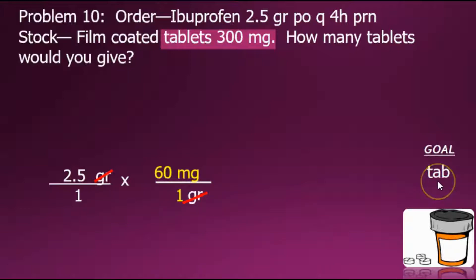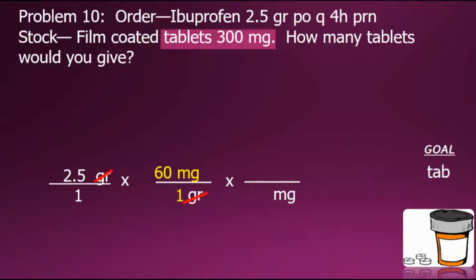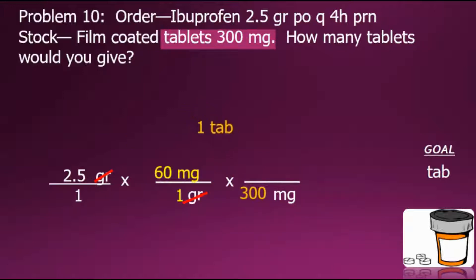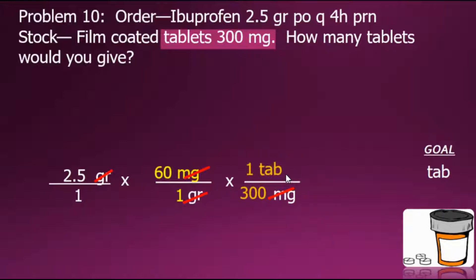We're not quite at our goal yet, so we need to establish another conversion factor fraction with milligrams in the denominator to cancel out the current unit. Returning to the information given in the problem, one tablet equals 300 milligrams. Expressing these as a conversion fraction with one tablet in the numerator and 300 milligrams in the denominator, we cancel out the common factor of milligrams, leaving our only unit as tablets — which is the goal. This is a good indication that we have set up the problem correctly.